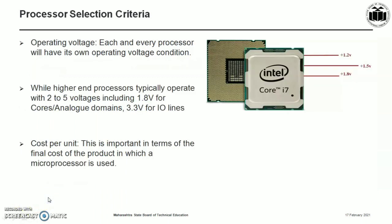The next criteria is operating voltage. Each processor has its own operating voltage conditions, and all desired ratings are provided in the user manual or datasheet. Higher-end processors typically operate with voltages including 1.8V for cores and 3.3V for IO lines. The next criteria is cost per unit, which is important in terms of the final cost of the product in which the microprocessor is used.